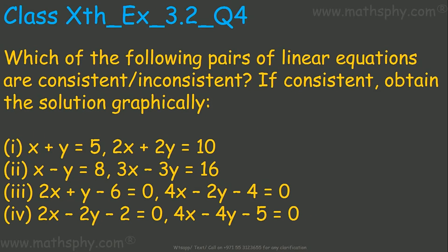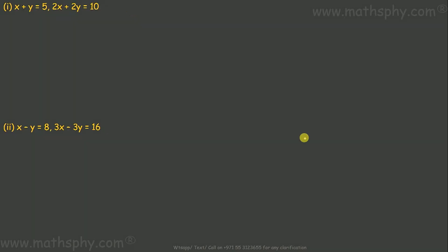This question asks: which of the following pairs of linear equations are consistent or inconsistent? We have four pairs of linear equations. We have to find out whether they are consistent or inconsistent — we will find them out through the ratio method. And if they are found consistent, we have to find the solutions graphically by plotting them into the graph.